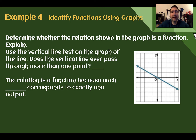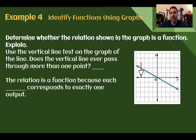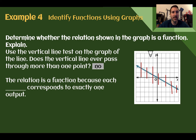Example 4: Identify functions using graphs. Determine whether the relation shown in the graph is a function — explain. Since it's graphed, we can use the vertical line test. Scanning through, there's no place where one part of the graph is above another for the same vertical line. There is no place where the vertical line ever crosses more than one point. This is a function because each input corresponds to exactly one output.